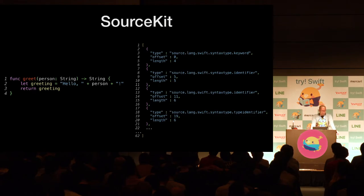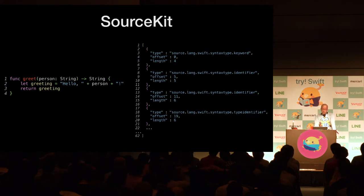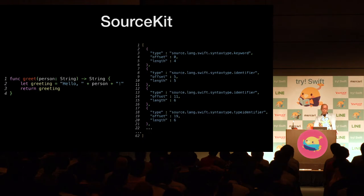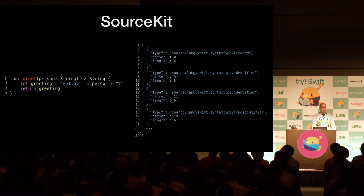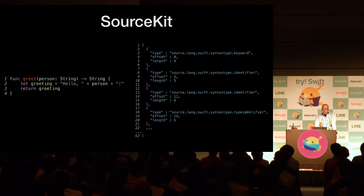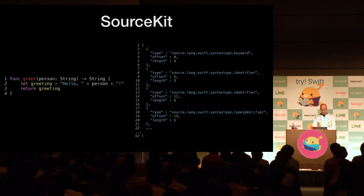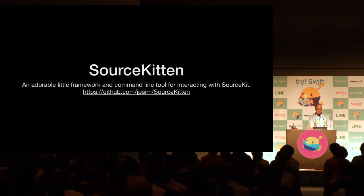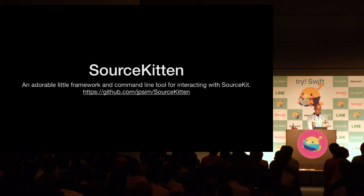This is an AST generated by SourceKit. It is not only used by the compiler internally — SourceKit is used by the Xcode source editor, so the format is easy to use from external tools. It is JSON format. SourceKit is a framework written in C++, but there is a Swift wrapper called SourceKitten made by JP Simard, so it can be handled easily from Swift. Thanks to SourceKit, we are able to read, analyze, or generate Swift code.